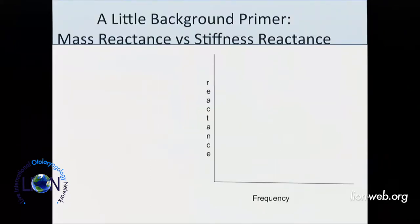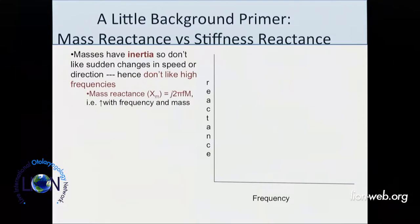Just some basic physics: masses have inertia, so they don't like to move back and forth very fast. Their reactance goes up with frequency. As you increase frequency in a mass-dominated system, the reactance goes up with frequency. If you double the frequency, you double the reactance — a 6 dB per octave relationship, since an octave is a doubling of frequency and 6 dB is a doubling of reactance.